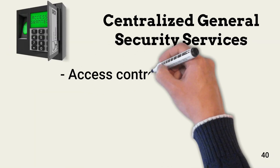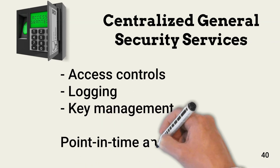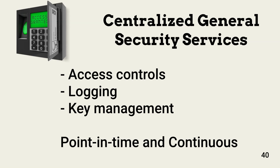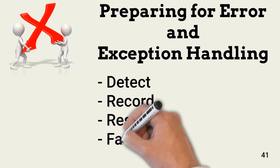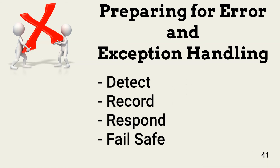The Centralized General Security Services principle guides us to centralized management and review of critical security activities. These include authentication, authorization, logging, and key management. Point-in-time efforts are not enough for critical systems and information; today's adaptive and continuous authentication solutions are more effective. Systems and associated controls do not always behave as we expect — this is the role of the preparing for errors and exceptions principle. Errors occur and traffic may behave well outside established baselines. When these things happen, we must be able to detect them and quickly respond. Failures or exceptions should result in blocking access to affected systems and data until response resolves the issues. This is again part of any incident response plan.